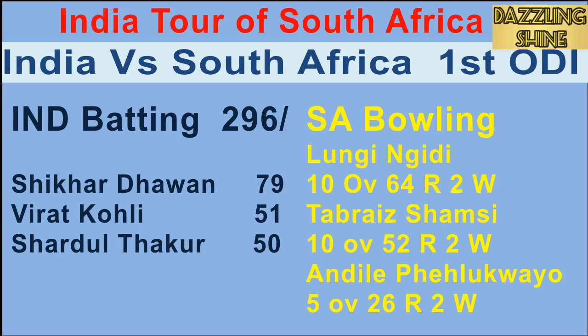Last ball of the twelfth over, Maharaj to Dhawan — a lucky outside edge and it's gone through the slips for four runs. Lucky for Dhawan, lucky for India, and four more runs come in.